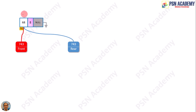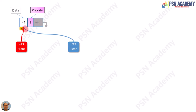In a priority queue using a single linked list, we have three parts: the data, the priority, and a next pointer which will point to the next node. Here you see that there is a front pointer pointing to the node at 743. Since this is the only node in the queue, the next pointer is pointing to null, and the rear pointer is also pointing to 743.